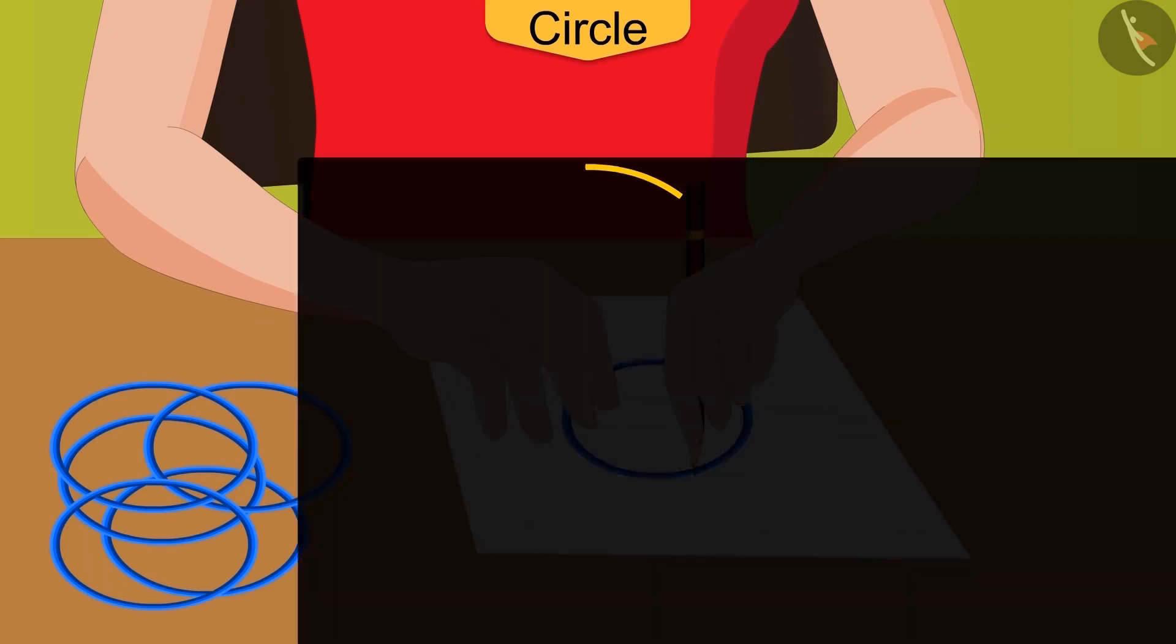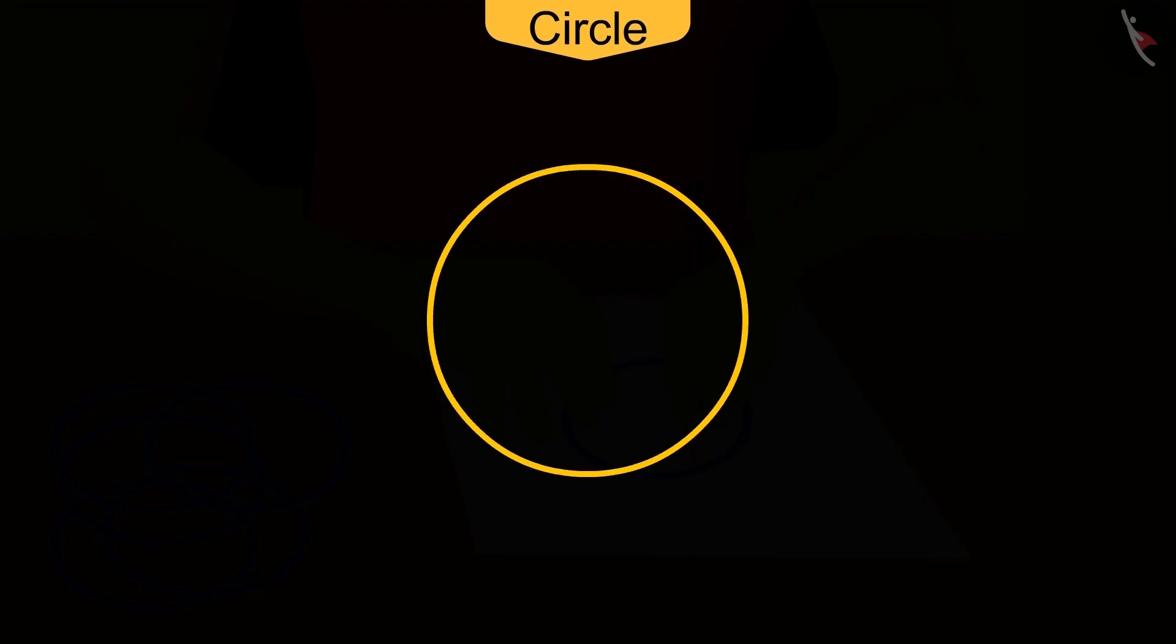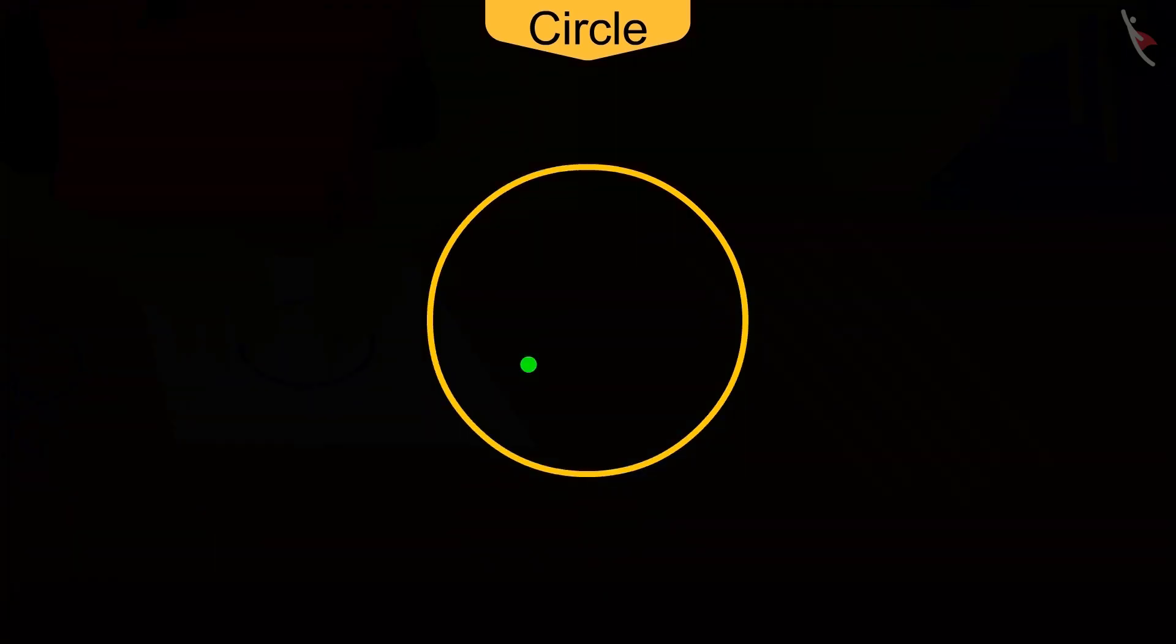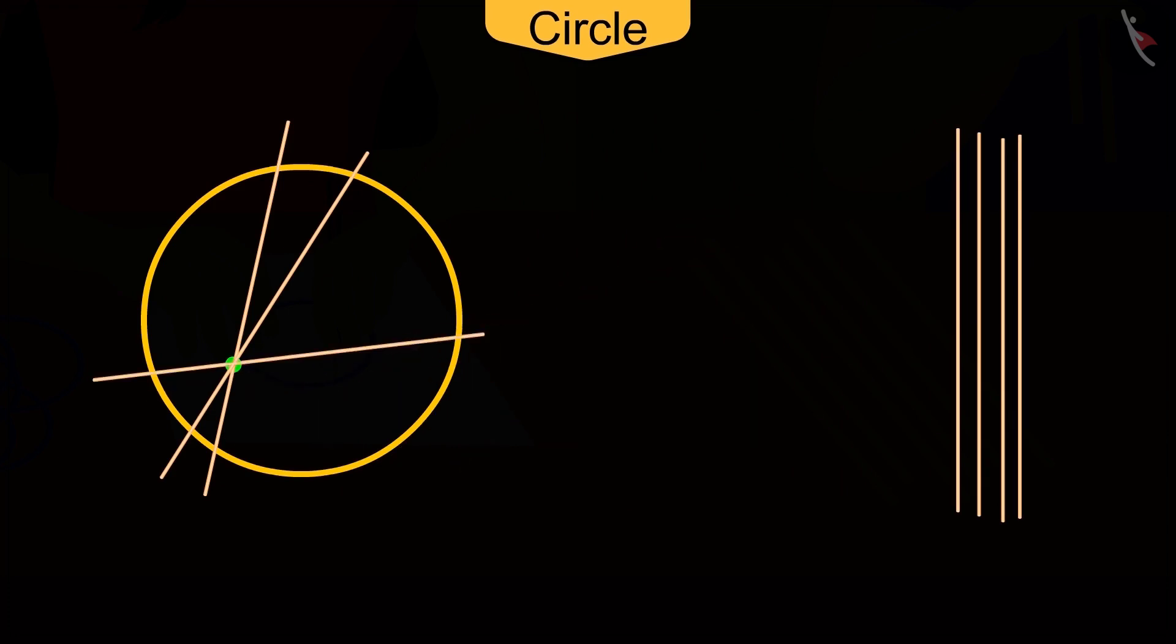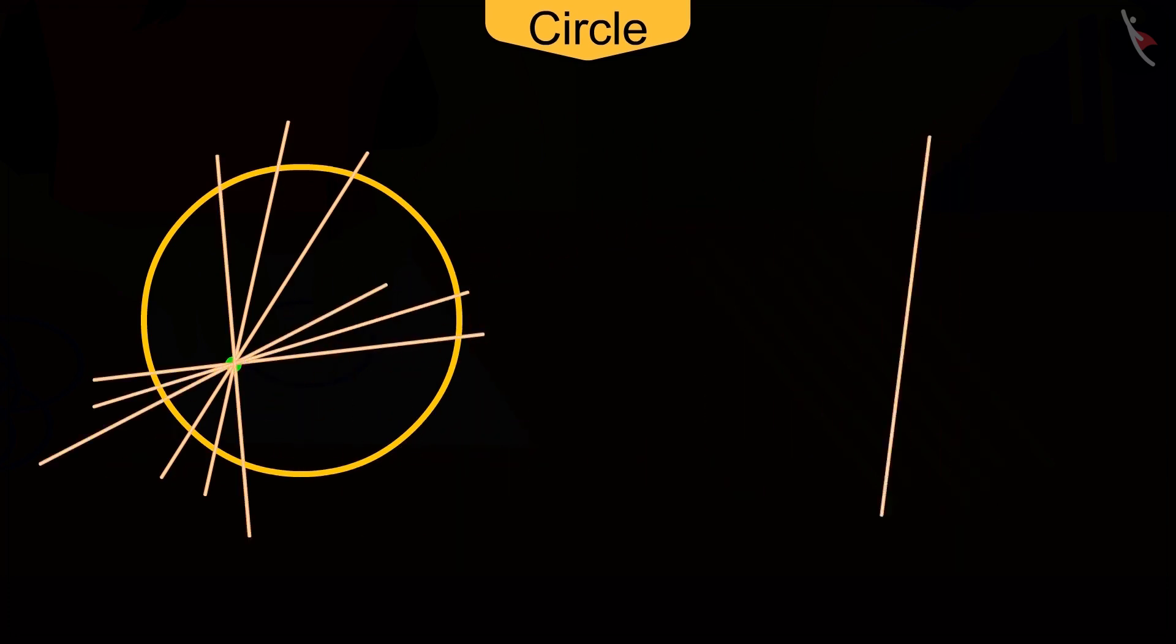Come on, let's trace the shape of the bangle on paper and make a point inside it. Now Sanju, place these sticks in such a way that each stick passes through that point.